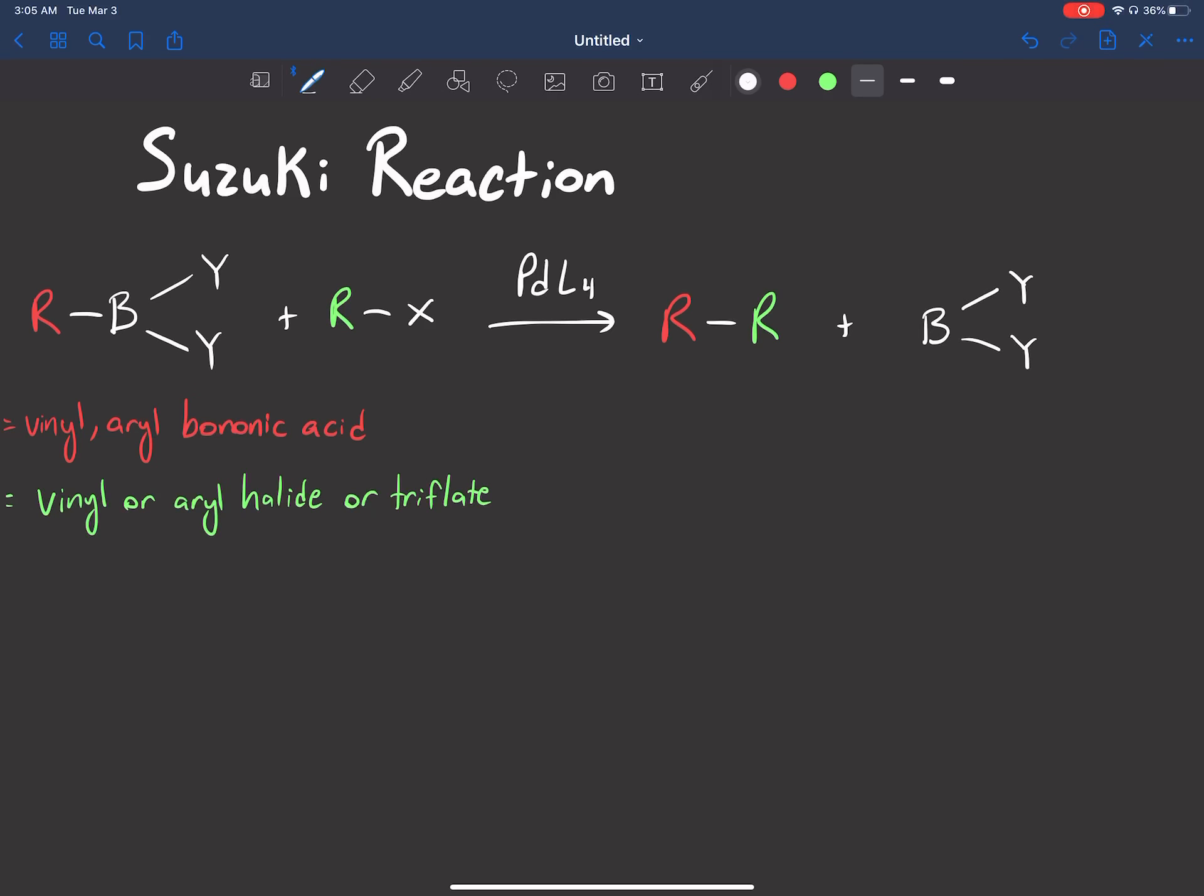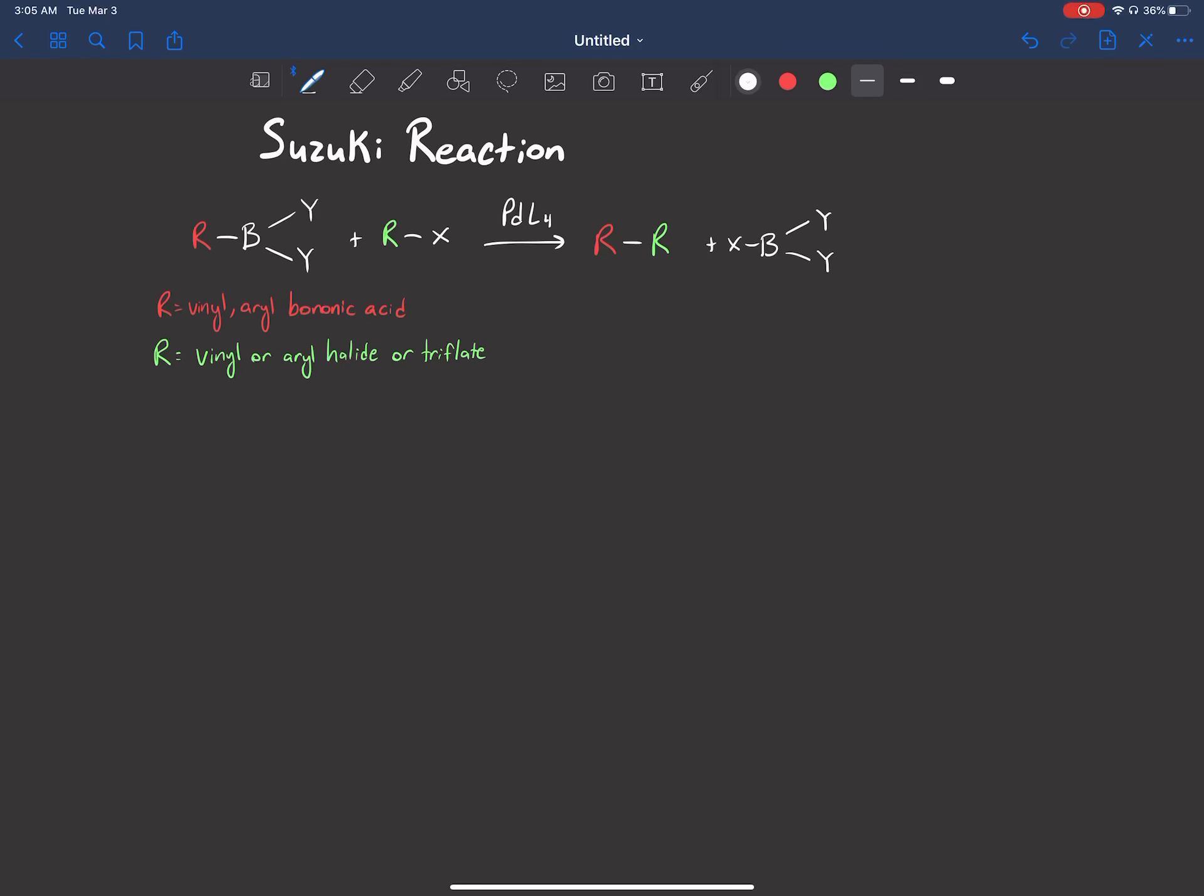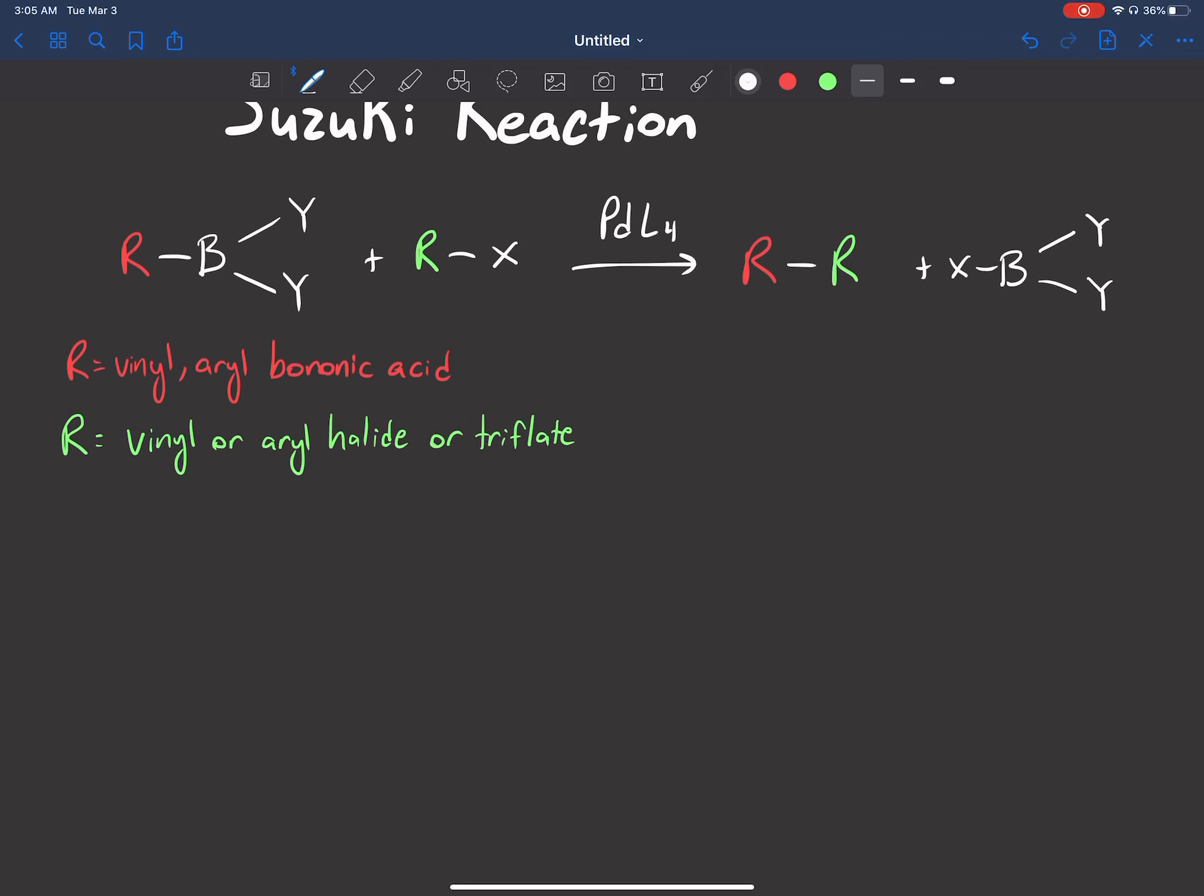The side product is just going to be boron bound to those two Y groups and now bound to that X, that halogen. So that's the general idea. It's very similar to the Heck reaction in terms of the products it creates. The only difference really is this starting compound and the stereochemistry is slightly different.